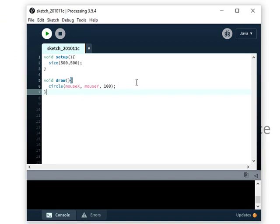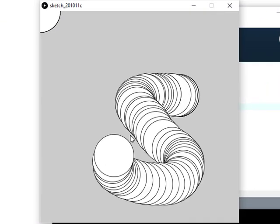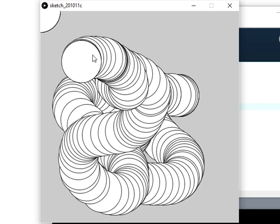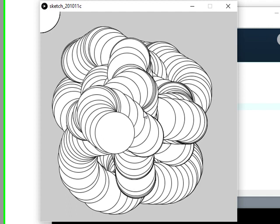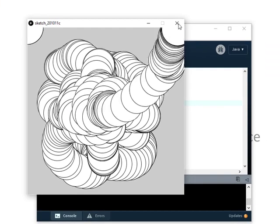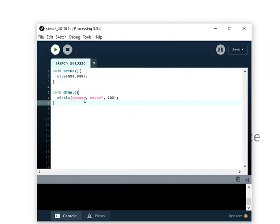So mouseX and mouseY is a number that changes based upon the location of my mouse on the x-axis and the y-axis. So this number is changing all the time. System variable means that it's something that's built into processing and all I need to do is to use it and processing knows what to do with it. So I put mouseX here and processing knows that it should pull the coordinates from my cursor, from my mouse.